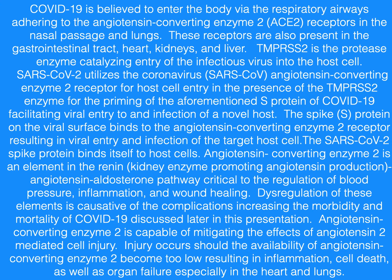The SARS-CoV-2 spike protein binds itself to host cells. Angiotensin-converting enzyme II is an element in the renin-angiotensin-aldosterone pathway critical to the regulation of blood pressure, inflammation, and wound healing. This regulation of these elements is causative of the complications increasing the morbidity and mortality of COVID-19, discussed later in this presentation.